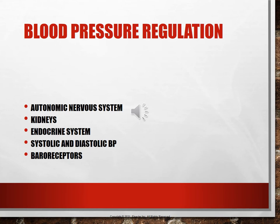The kidneys also help regulate blood pressure through the renin-angiotensin system. Kidneys retain water and sodium when there is a decrease in perfusion, which increases blood pressure. Fluid retention and activation of the renin-angiotensin-aldosterone mechanism causes blood pressure to rise. ADH from the posterior pituitary gland also regulates vascular volume — we need adequate volume to maintain blood pressure.